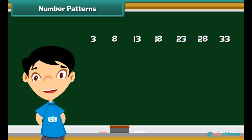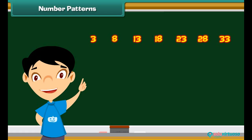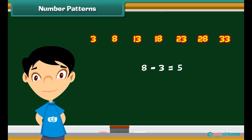Consider another series of numbers: 3, 8, 13, 18, 23, 28, 33. These numbers are also arranged in a way that the difference between two consecutive numbers is always 5.